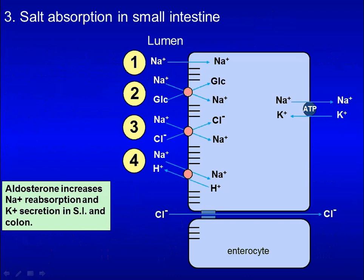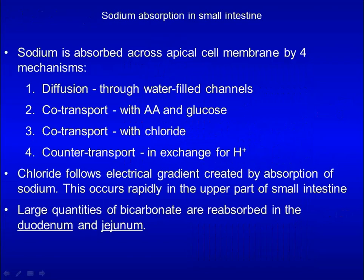Here we will look at salt absorption in the small intestine. Salt is absorbed across the apical cell membrane by four mechanisms: by diffusion through sodium channels; by co-transport with amino acids or glucose; by co-transport with chloride; and by co-transport with protons. Most chloride is transported across the epithelia by following the electrochemical gradient of the sodium ion. This information is summarized in this slide.